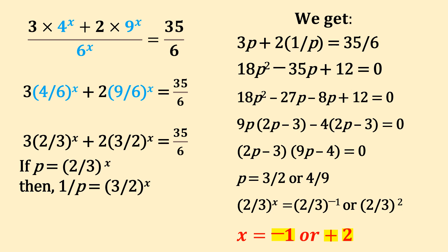Factorize by breaking the middle term method or solve using quadratic equation formula. 2p minus 3 into 9p minus 4 is equal to 0. P is equal to 3 by 2 or 4 by 9.